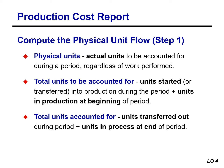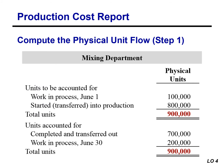The next slide illustrates the flow of physical units for Kellogg's mixing department for the month of June. Total units to be accounted for include units in production at the beginning of the period — the work in process beginning balance — plus units started or transferred into production during the period. Total units accounted for include the units transferred out during the period plus units in process at the end of the period — the work in process ending balance. The records indicate the mixing department must account for 900,000 units: 700,000 were transferred to the baking department and 200,000 were still in process.